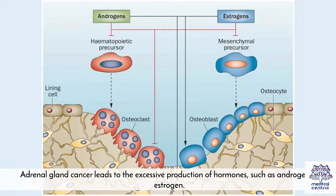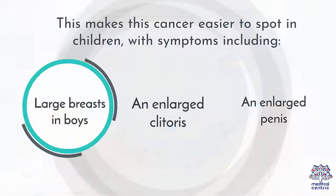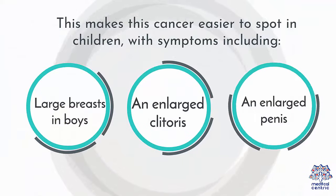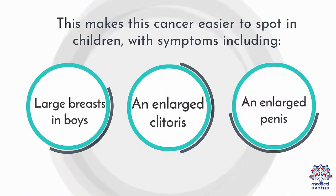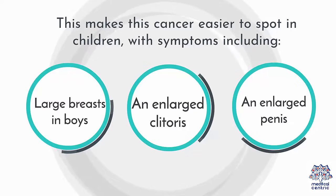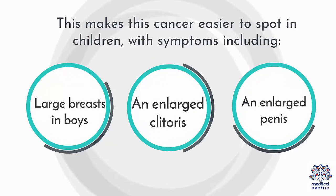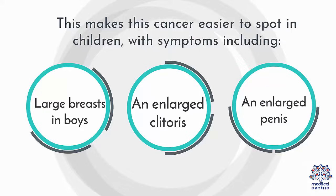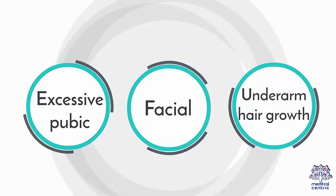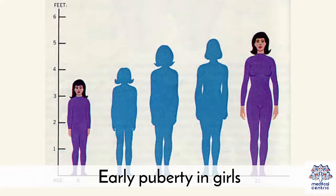Symptoms: Adrenal gland cancer leads to the excessive production of hormones, such as androgen or estrogen. This makes this cancer easier to spot in children, with symptoms including: large breasts in boys, an enlarged clitoris, an enlarged penis, excessive pubic, facial, and underarm hair growth, and early puberty in girls.